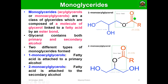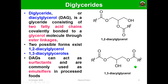In 1-monoglycerides, the acyl residue is attached via an ester linkage (COO) to the primary alcohol. If the fatty acid residue is attached to the secondary alcohol, that is known as 2-monoacyl glycerol. In 2-monoglycerides, attachment is at the second position, and the remaining hydroxyl groups are free.